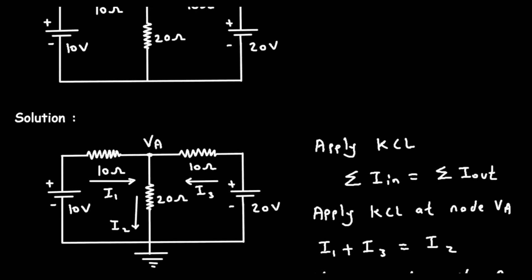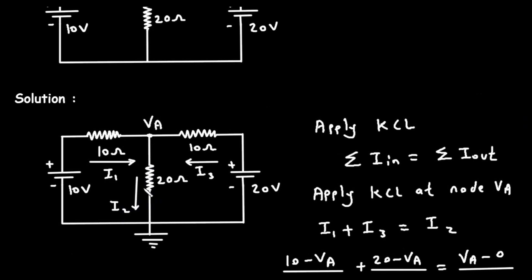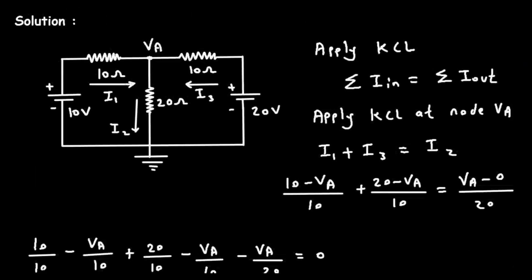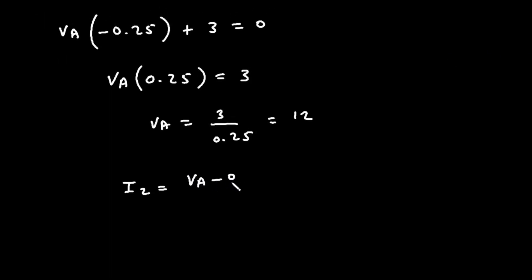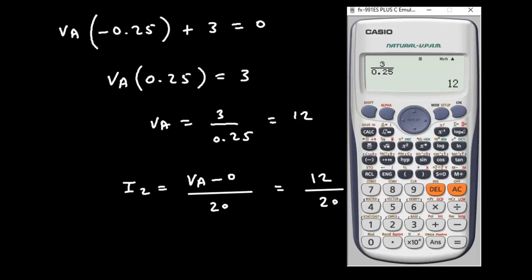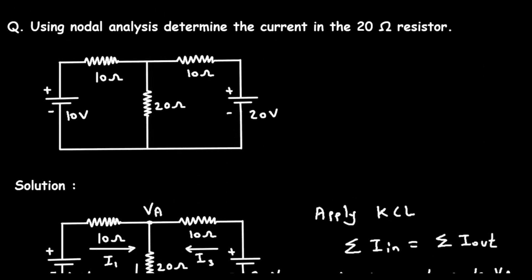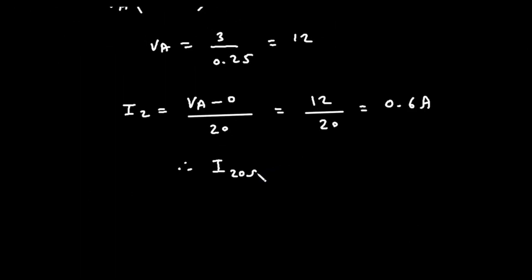Now we got the value of VA. We have to find the current through this 20 ohm resistor, that is I2. I2 is equal to VA minus 0 divided by 20. The value of VA is 12, so it is 12 minus 0 divided by 20, which is 12 divided by 20, equal to 0.6 ampere. Therefore the current through this 20 ohm resistor, I20 ohm, is equal to 0.6 ampere. This is how we can find the value of current by using nodal analysis.